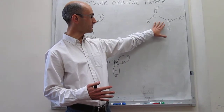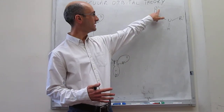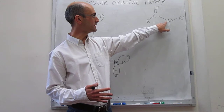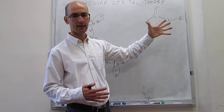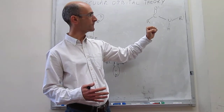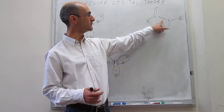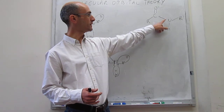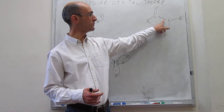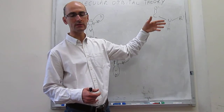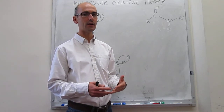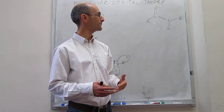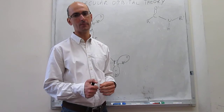When we say this moiety is planar, it means that all four atoms — this atom, that atom, this atom, and this atom — are actually all in the same plane. This needs explanation because it's not obvious. In principle, you would expect bond rotation around what looks like a single bond, and that should destroy planarity. But we know that in reality, this moiety is actually planar.